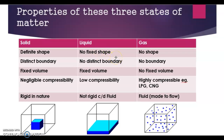Liquids do not have a fixed shape or fixed boundaries, and have low compressibility. They are not rigid because they are fluid in nature. Gases have no fixed shape, no boundaries, and no fixed volume, but they are highly compressible. For example, LPG cylinders, oxygen cylinders in hospitals, and CNG used as fuel in vehicles — large volumes of gas are compressed into small cylinders for easy transport.